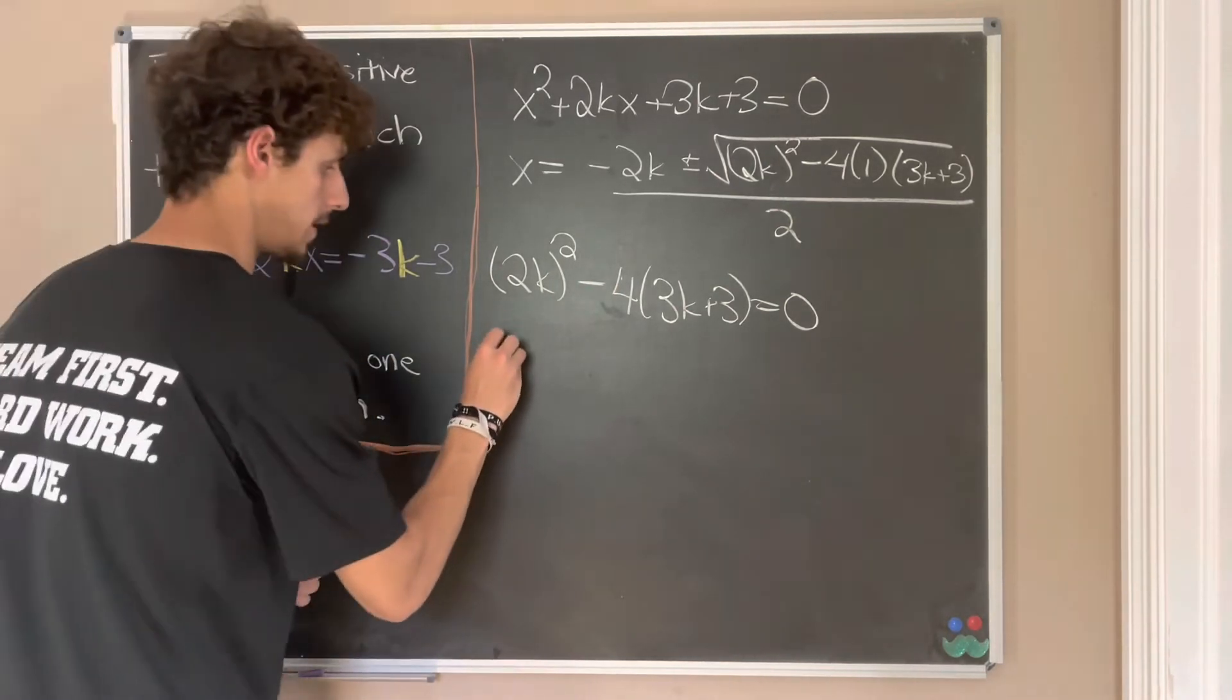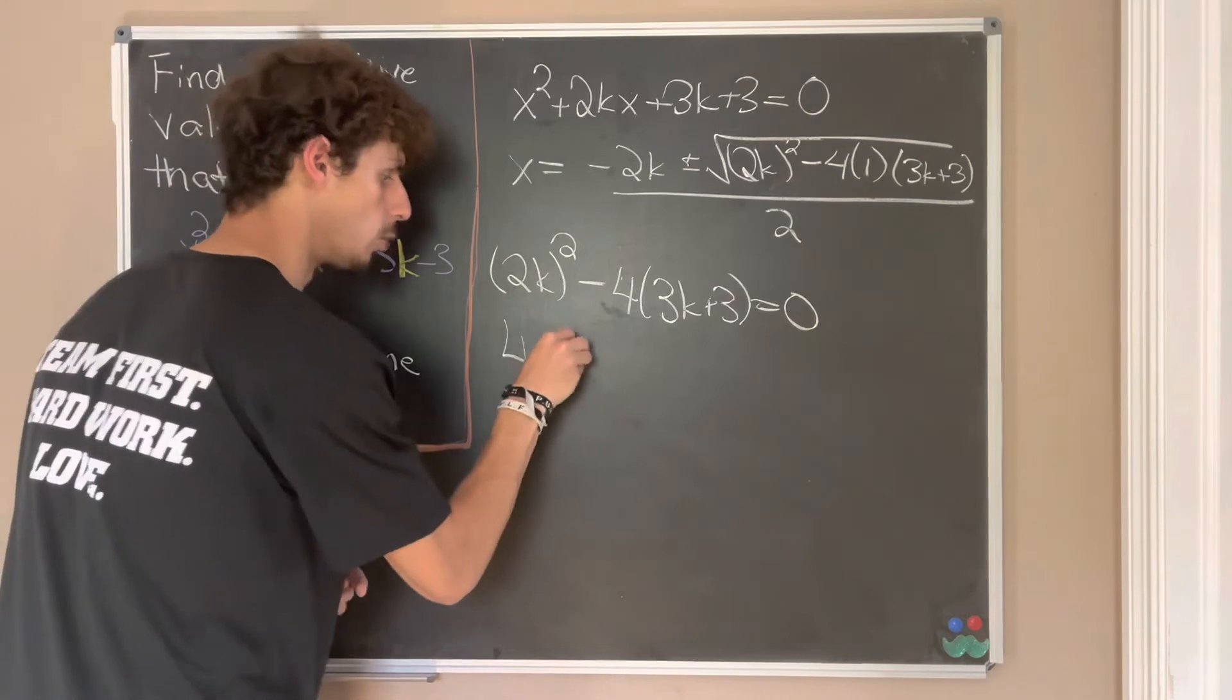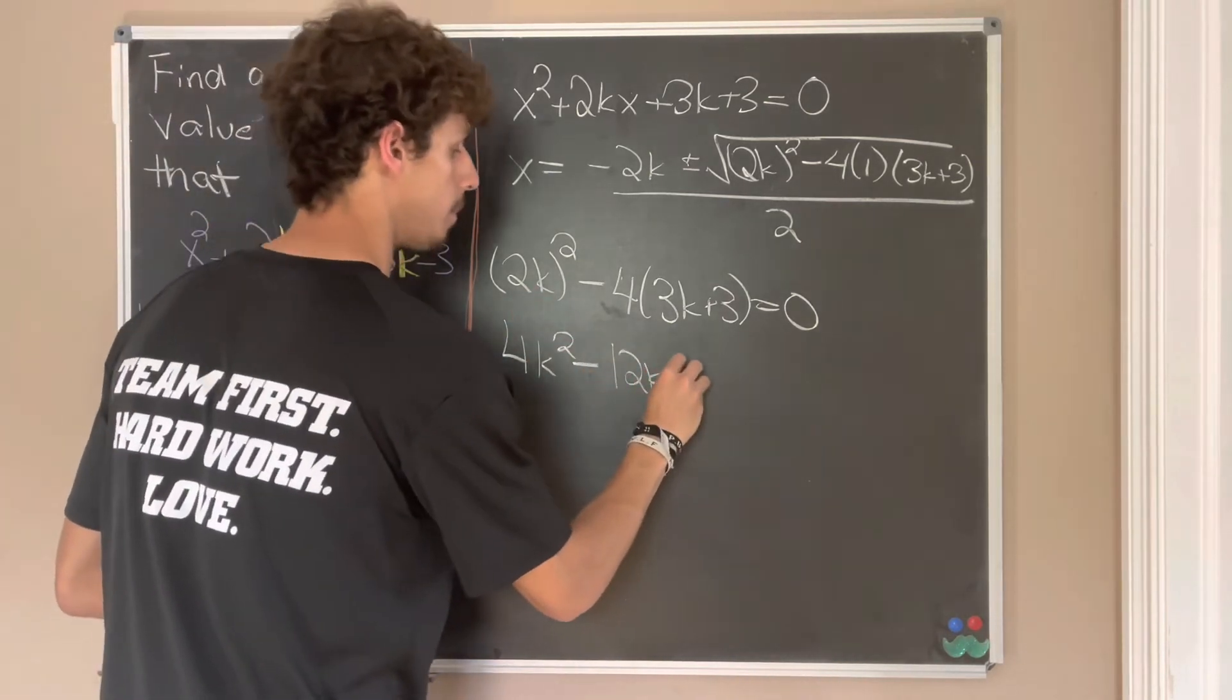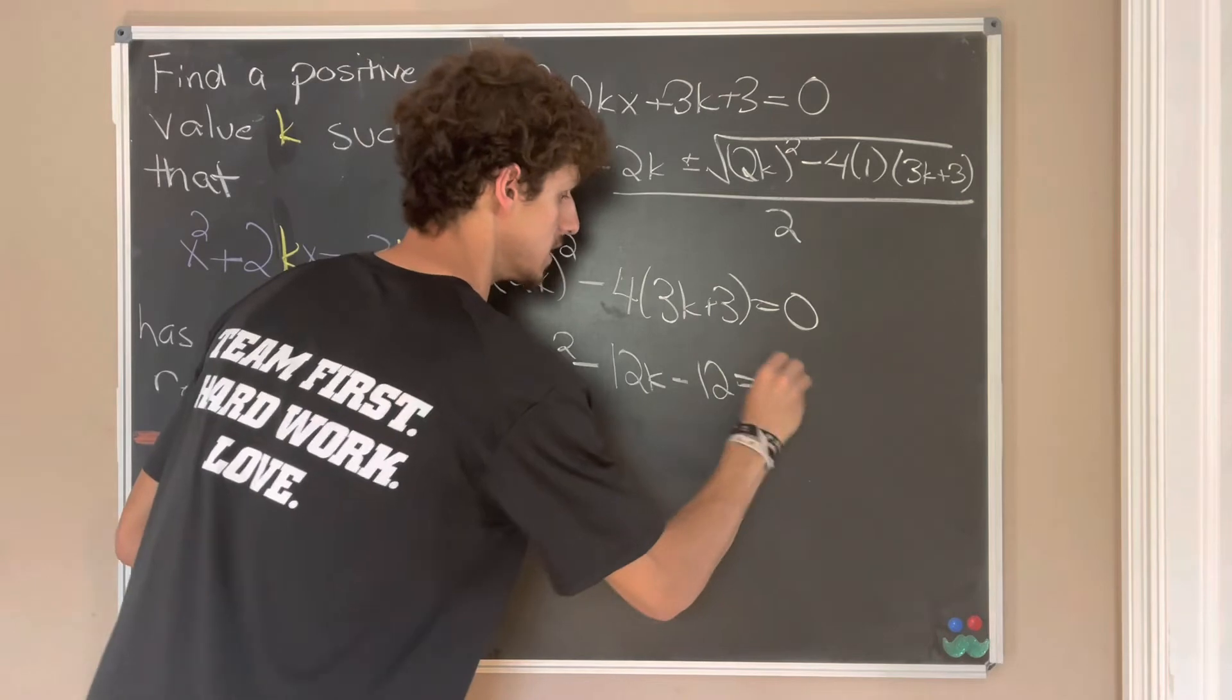But now we can expand this out. So we'll have 4k squared minus 12k minus 12 is equal to zero.